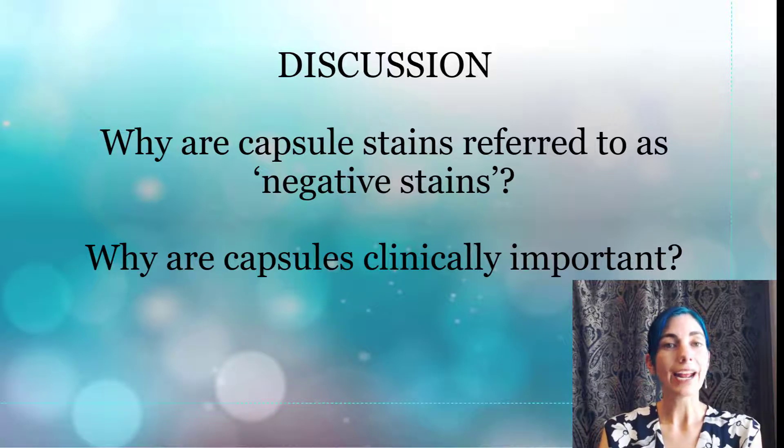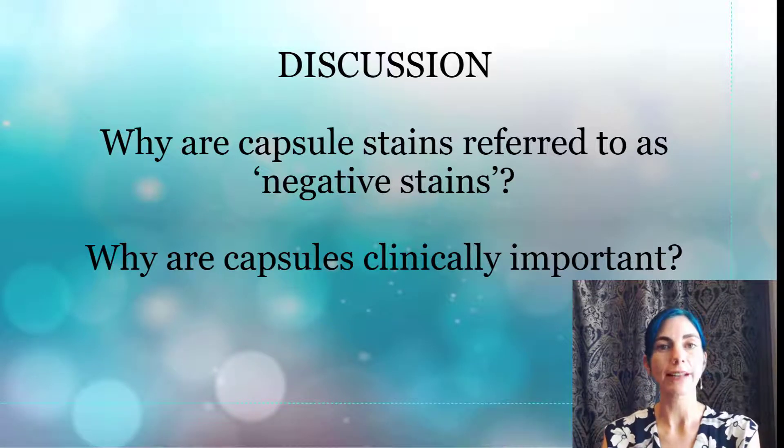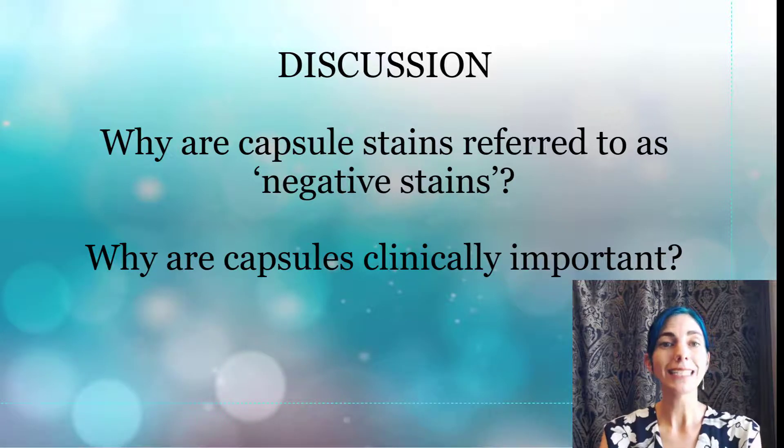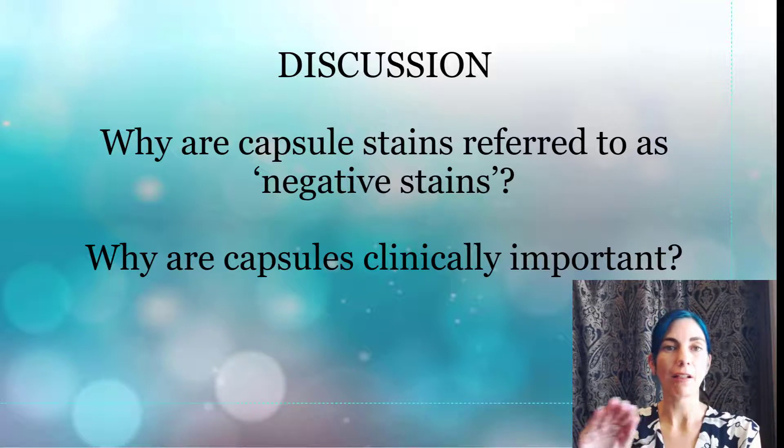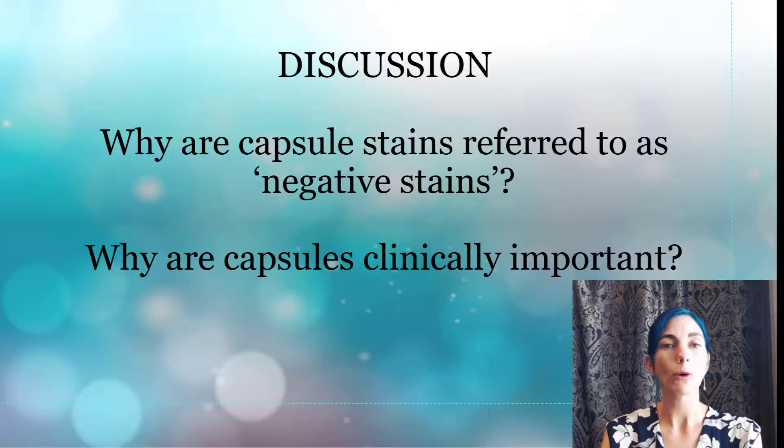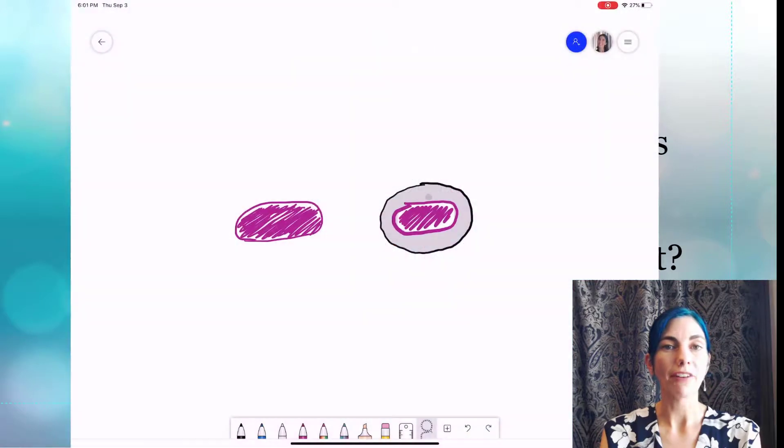So if you had a culture of a bacterial species that did not produce a capsule so this is non-encapsulated bacteria and you were to do a capsule stain what would you see? Well you wouldn't see any white you would simply see the light pink Congo red background and dots that represent the vegetative cells stained a little bit darker with Carbofusion but there would be no white halo around them. So that would be the result of a capsule stain for a non-encapsulated bacteria.